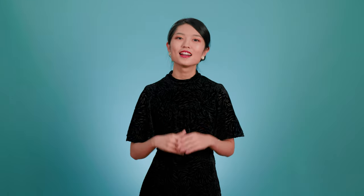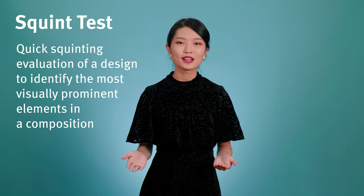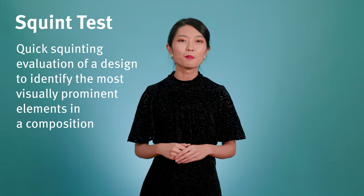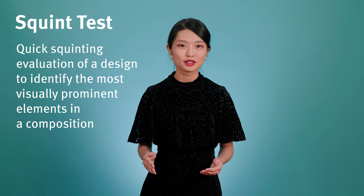And that is the squint test. The squint test is a simple squinting evaluation of a design to identify the most visually prominent elements in a composition. When we squint our eyes, the blurred vision allows us to focus on the things that really stand out. This is an effective way to understand the perceived visual hierarchy and the overall balance of a page.